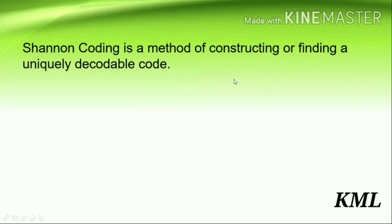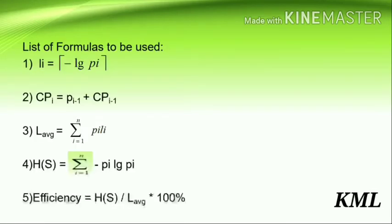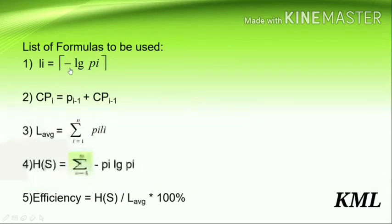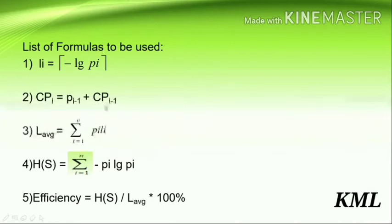Shannon coding is used for encoding the source letters. Here are the list of formulas I'll be using to solve the problem, so you can make a note or take a screenshot. Li is the length, which equals the ceiling function of negative log base 2 of Pi.